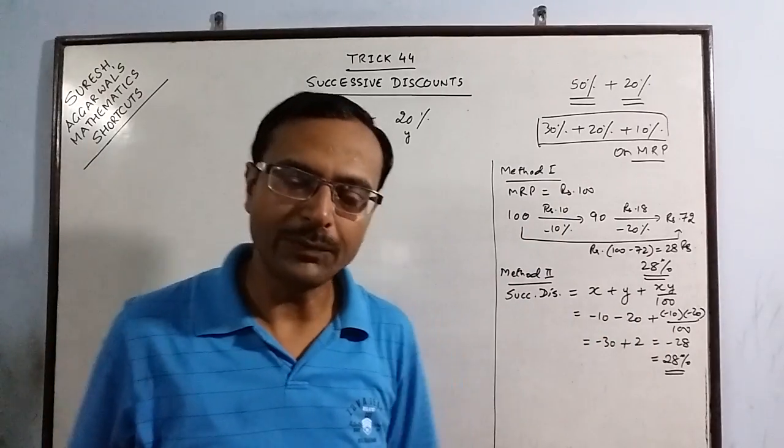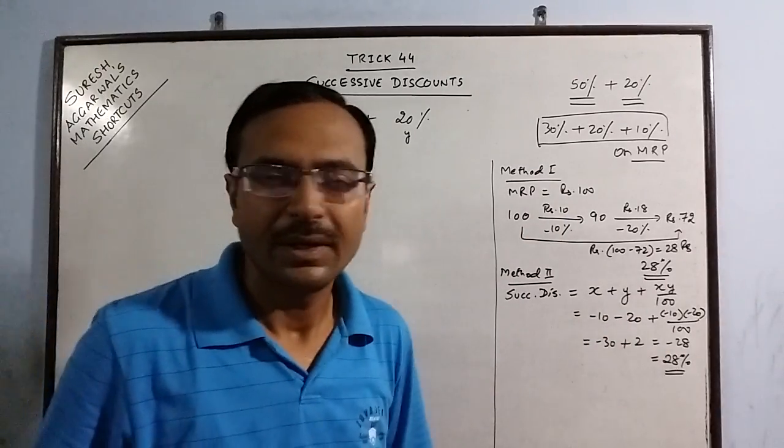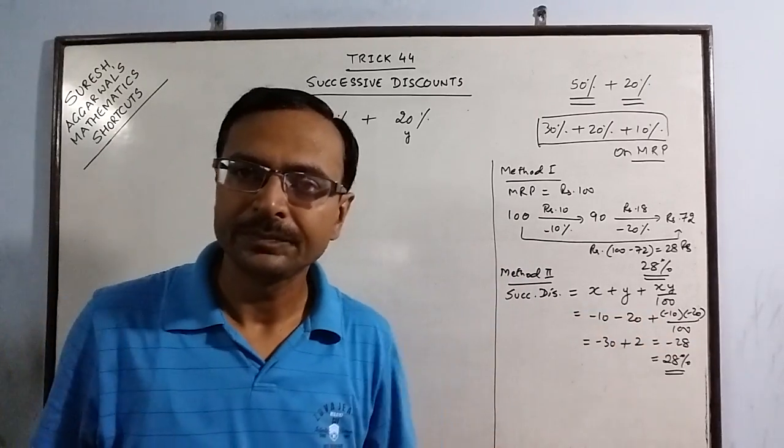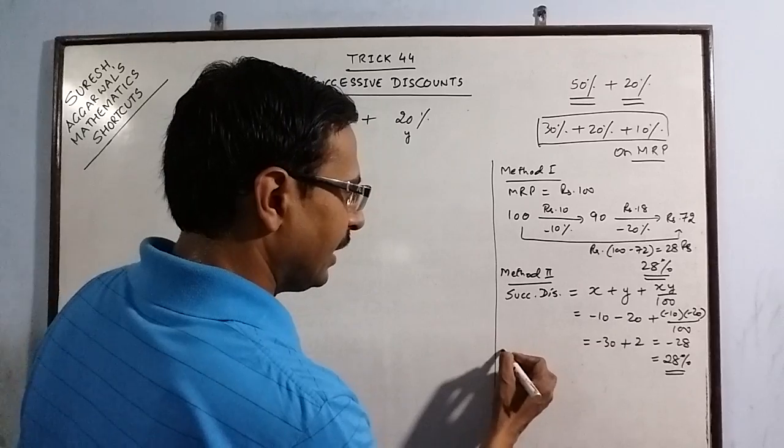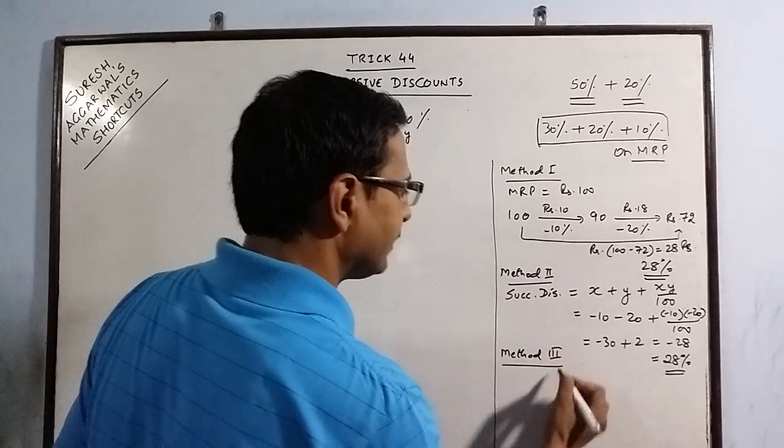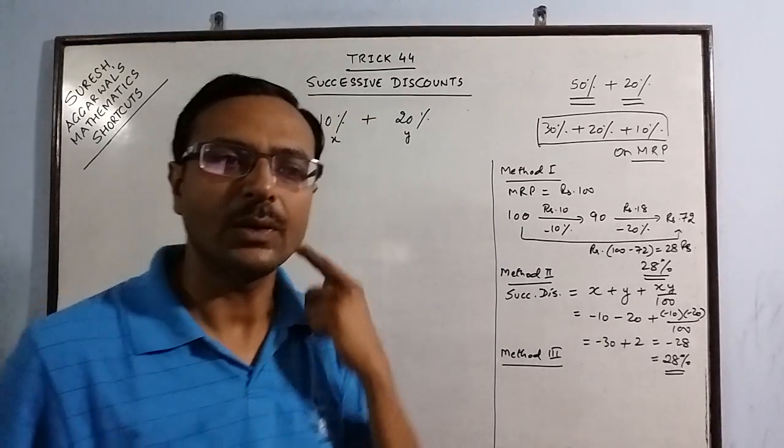Both the methods are often used by students. Some use this method taking 100 as MRP and some use the direct formula. Now I am going to tell you another method for calculating these successive discounts into a single discount.